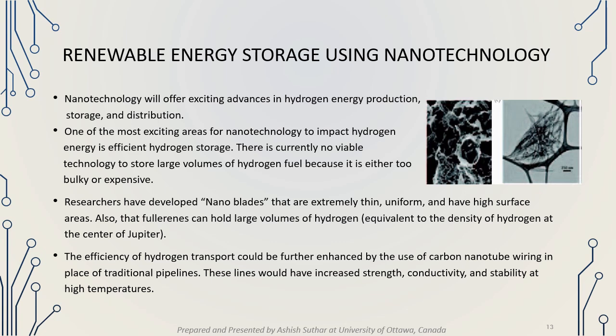Now let's talk about renewable energy storage using nanotechnology. One of the most exciting areas is efficient hydrogen storage. Currently, there is no viable technology to store large volumes of hydrogen fuel because it is either too bulky or expensive. Researchers have developed nanoblades that are extremely thin, uniform, with high surface areas, and can hold large volumes of hydrogen equivalent to the density of hydrogen at the center of Jupiter. Carbon nanotube wiring in place of traditional pipelines could further enhance hydrogen transport efficiency with increased strength, conductivity, and stability at high temperatures.